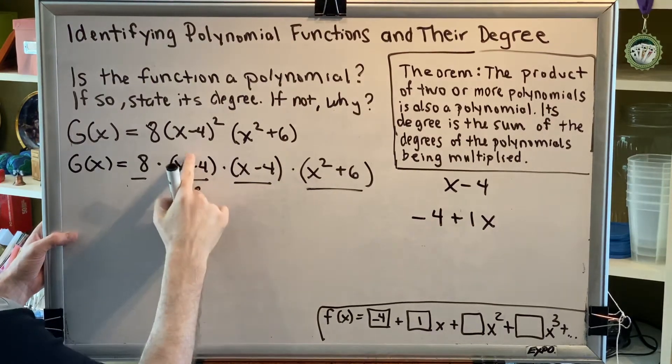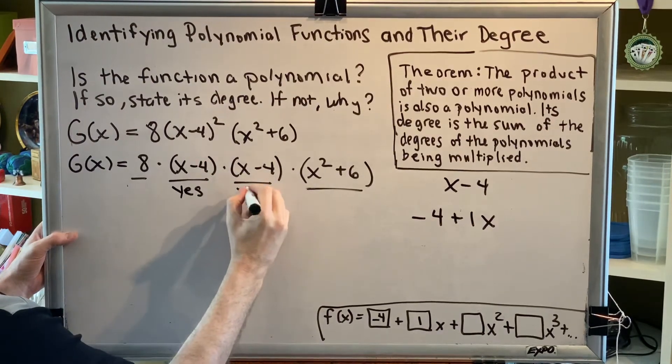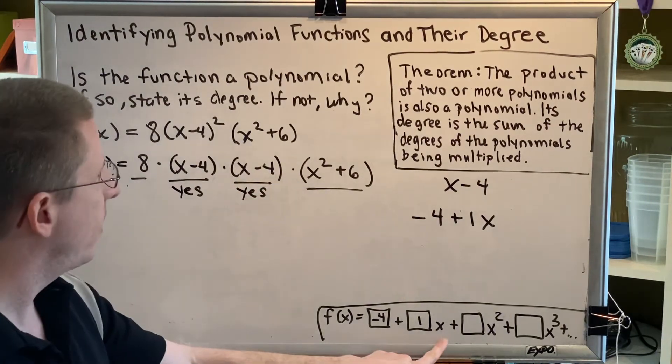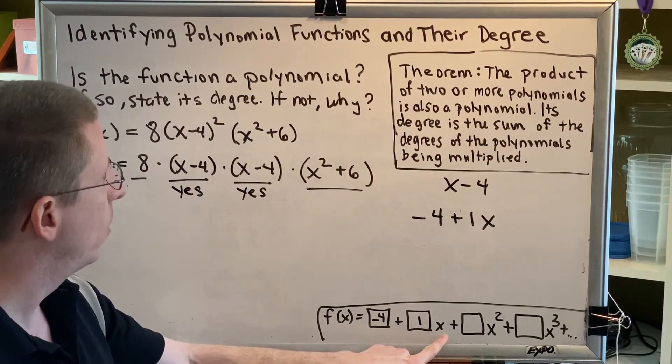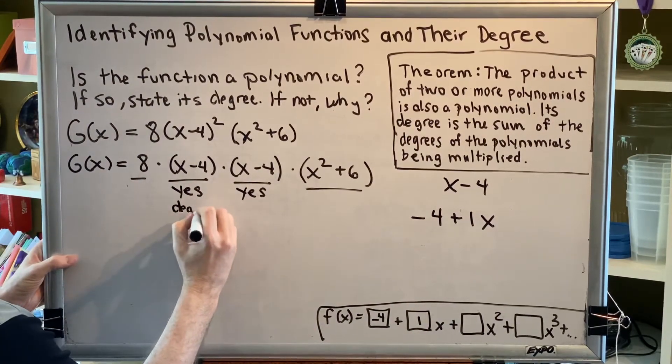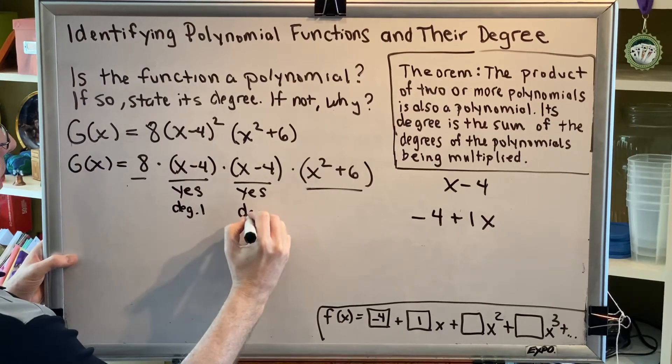And of course, if x minus 4 is a polynomial, then this other x minus 4 is also a polynomial. The degree is the highest exponent of x needed to write it, which would be x to the first power. So this is yes, degree 1, and yes, degree 1.